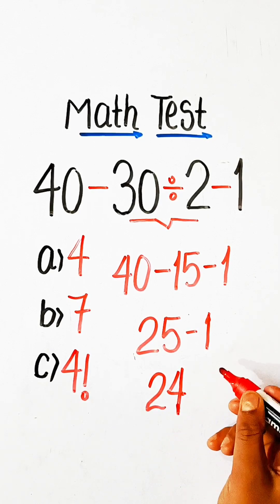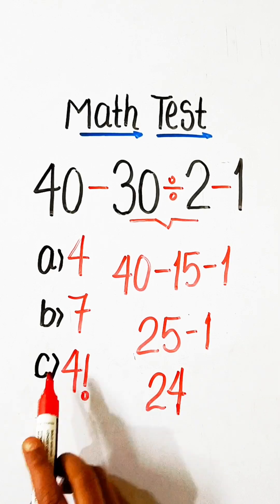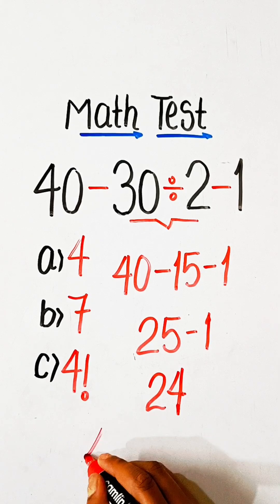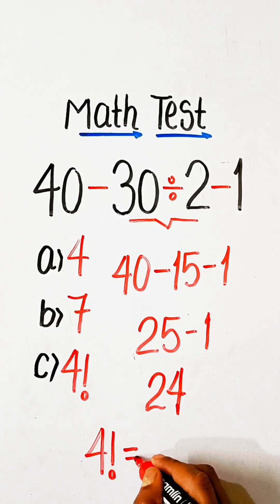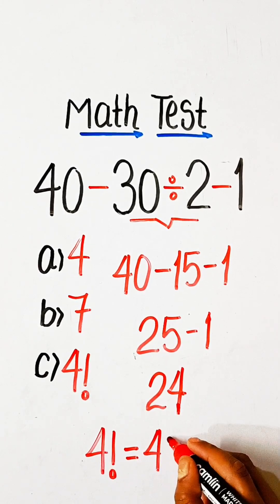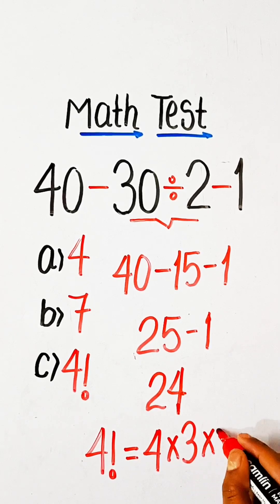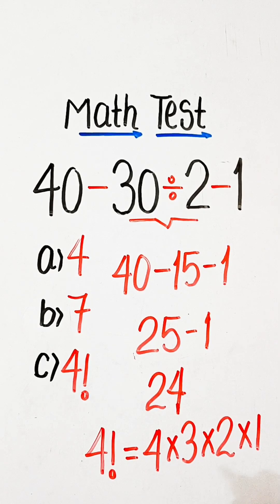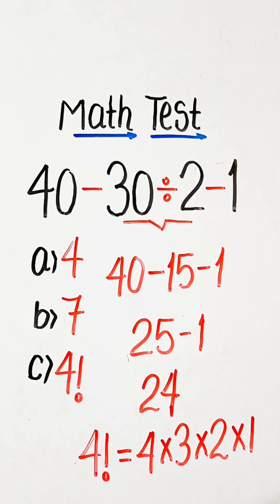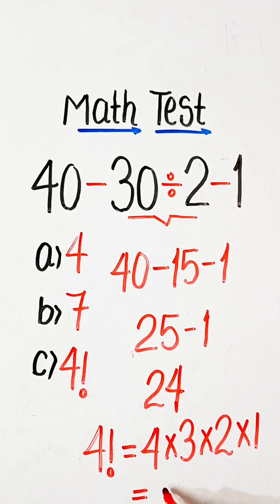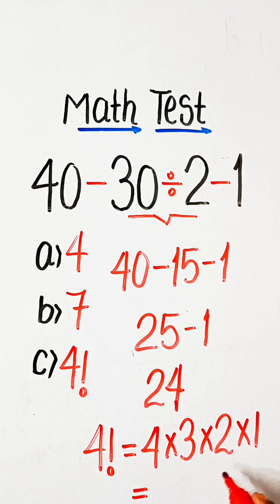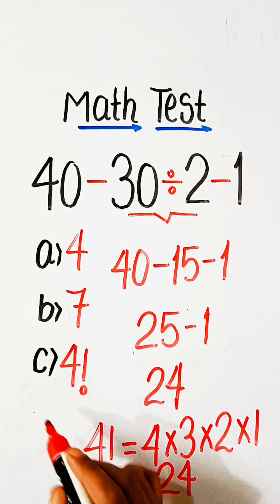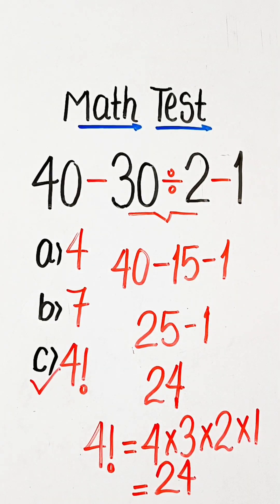So 24 is the correct answer. In the options we have 4, 7, and 4 factorial. We know that 4 factorial equals 4 × 3 × 2 × 1, and after solving this we get 24. So option C, 4 factorial, is our correct answer.